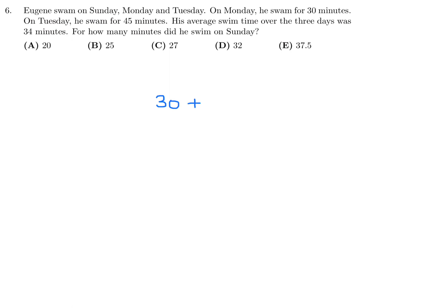(30 + 45 + x)/3 = 34. So, that would be 75 + x = 34 × 3, which is 102. And therefore, x = 102 - 75, and that is 27. So, number 6, the answer is C.